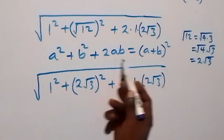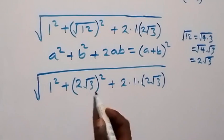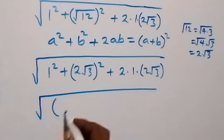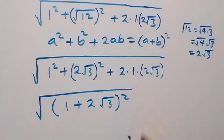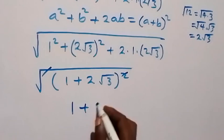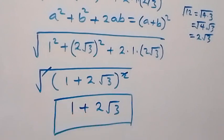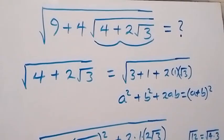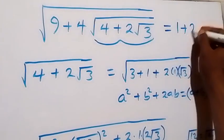This follows the form a² + b² + 2ab = (a + b)², where a is 1 and b is 2√3. This equals square root of (1 + 2√3)², and the square cancels the square root. So the answer to the given problem is 1 + 2√3.